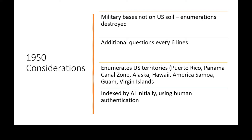A couple of other things about the 1950 census: military bases not on United States soil — the enumerations were destroyed. So if you have a military base in a foreign country, not in a territory, those enumerations no longer exist. The 1950 census does enumerate U.S. territories. It was also initially indexed by artificial intelligence, then human authentication followed. If a military base was in the Panama Canal Zone — a territory — those would be found enumerated. Alaska and Hawaii also. But if not on U.S. soil, the enumerations were destroyed.